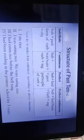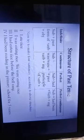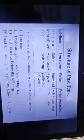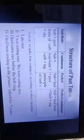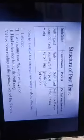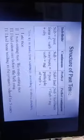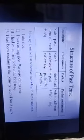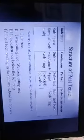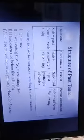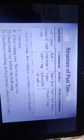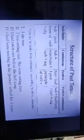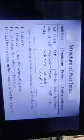Past continuous tense structure: Subject + was/were + verb + ing. Example: 'I was eating rice' or 'We were eating rice.' Here 'I' is subject, 'was' is auxiliary verb, and 'eating' is verb + ing. Since 'we' is plural, we use 'were': 'We were eating rice.'